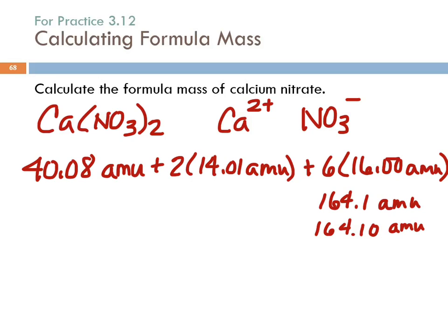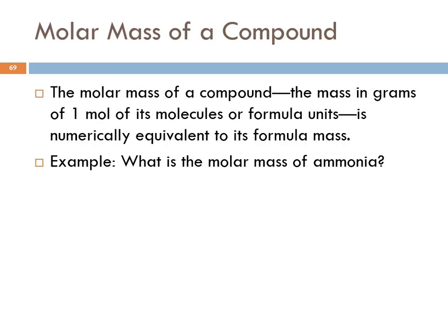That 164.1 AMU is the mass of one formula unit of calcium nitrate. One mole of calcium nitrate would be the same number but in grams instead of atomic mass units — that's the molar mass. Formula mass is the mass of a formula unit in atomic mass units. Molar mass is the mass in grams of one mole of molecules or formula units, and it's numerically equal to the formula mass.